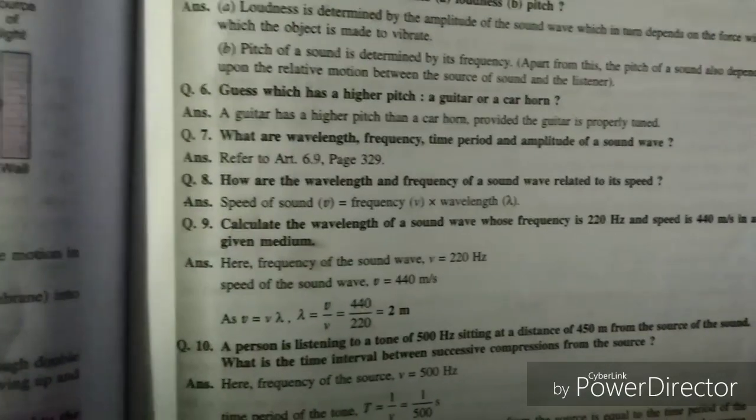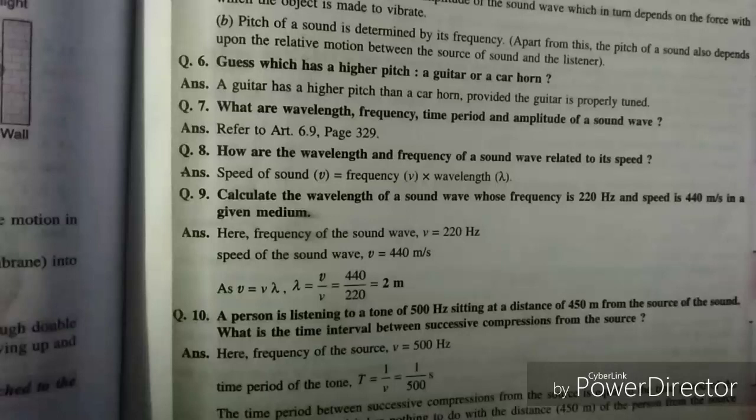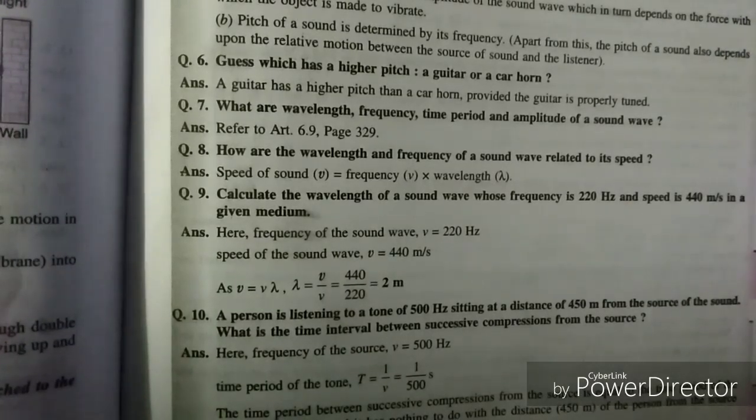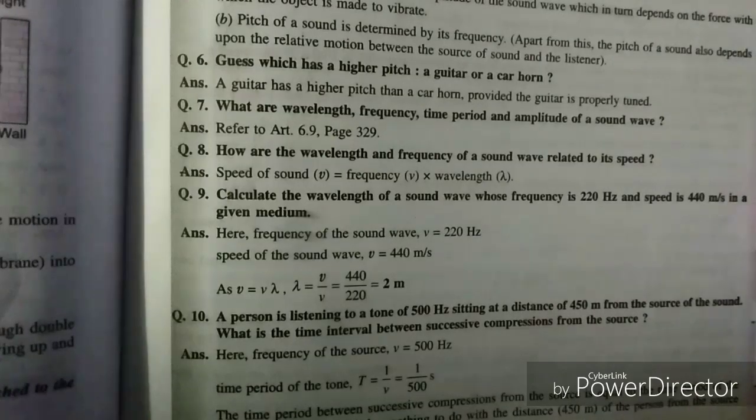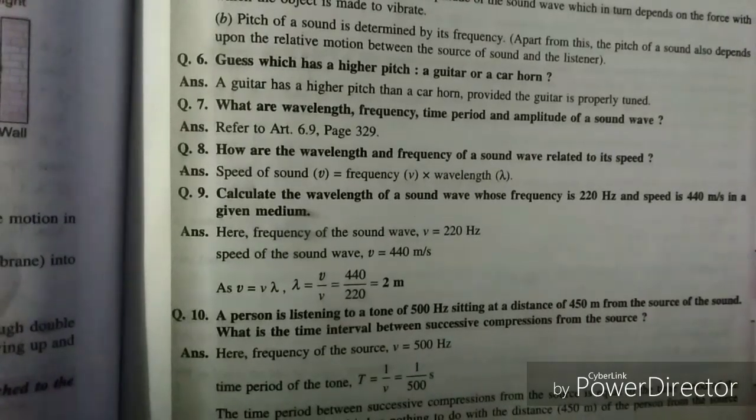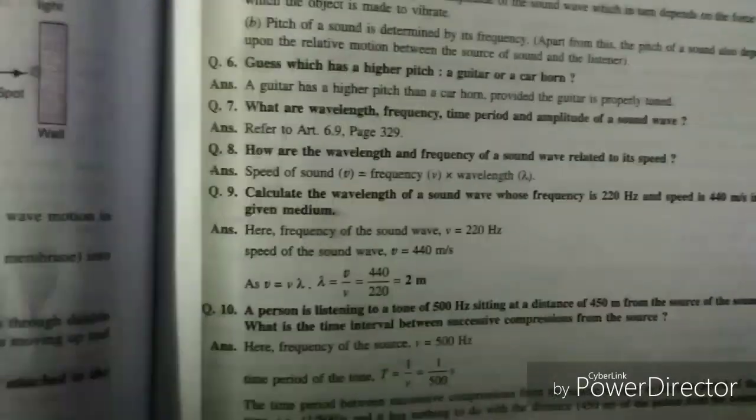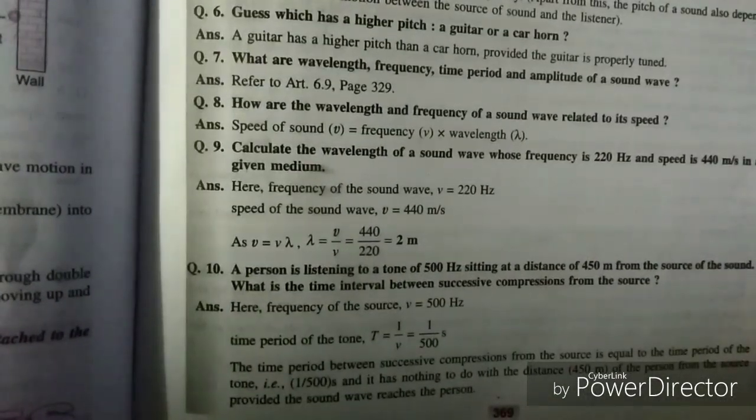A person is listening to a tone of 500 hertz sitting at a distance of 450 meter from the source of the sound. What is the time interval between successive compressions from the frequency? So we are given the frequency. We know that time period is equal to 1 by frequency. So it would be 1 by 500 seconds.